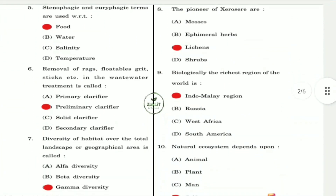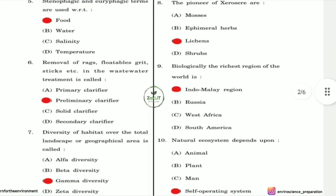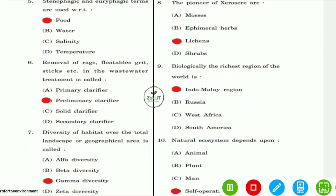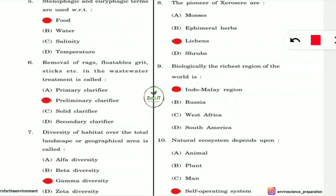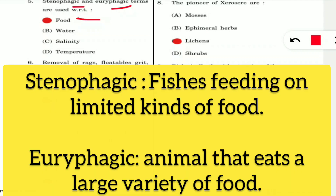Question 5: The terms stenophagic and euryphagic are used with respect to the food habits of organisms. The suffix 'phagic' relates to feeding behavior, so these are terms related to the food habits of organisms.